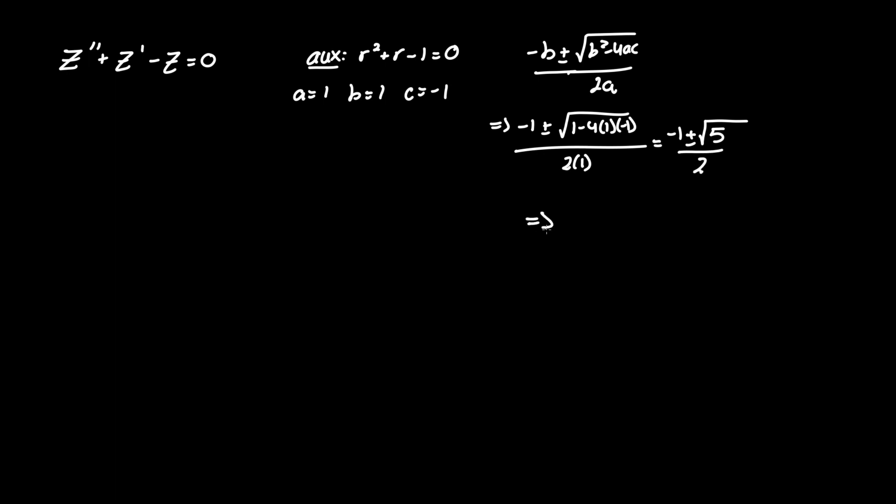So this now gives us our two root solutions r equals minus one plus minus square root of five all over two, in which r one equals negative one minus radical five all over two and r two equals negative one plus radical five over two.